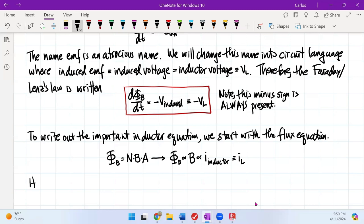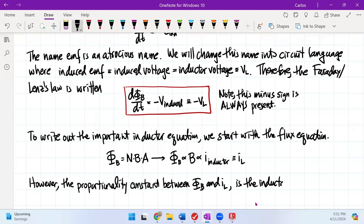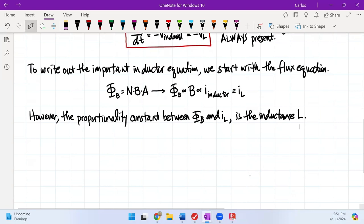However, the proportionality constant between magnetic flux and current is the inductance L. In other words, we can write that the magnetic flux has to be proportional to the inductor current with this constant L. And again we've already defined that this inductance depends on the number of turns, the area of the bore, and the length of the wire.